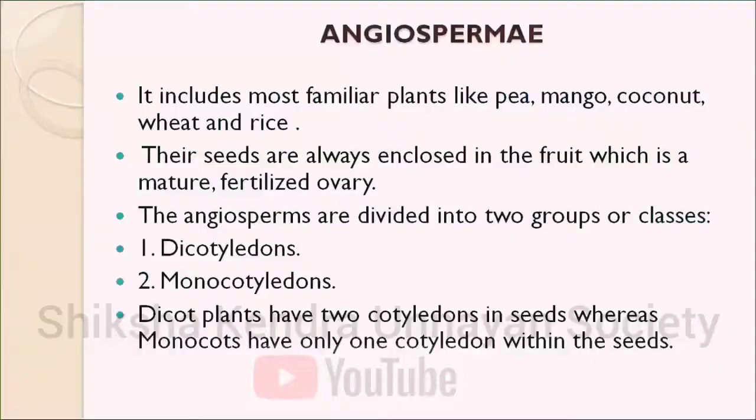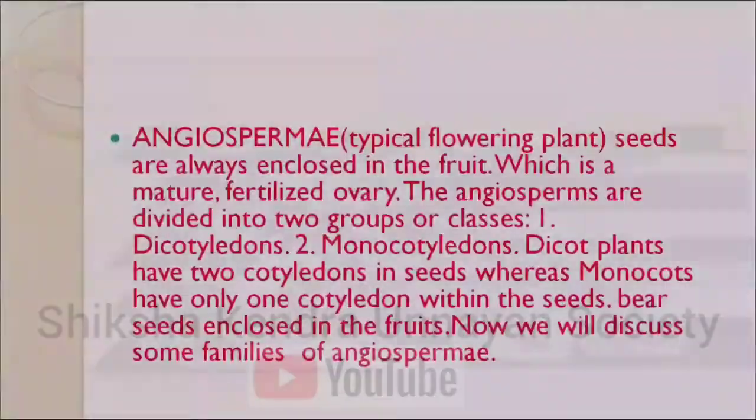The next family of plants is Angiospermia, which includes most familiar plants like pea, mango, coconut, wheat and rice. It is a typical flowering plant. Seeds are always enclosed in fruit — a mature fertilized ovary. Angiosperms are divided into two main groups: dicotyledons and monocotyledons. Dicot plants have two cotyledons in seeds whereas monocot plants have only one cotyledon. Seeds are enclosed in fruits.